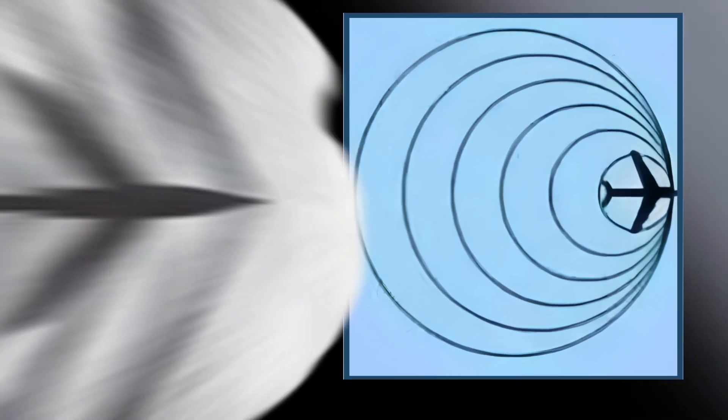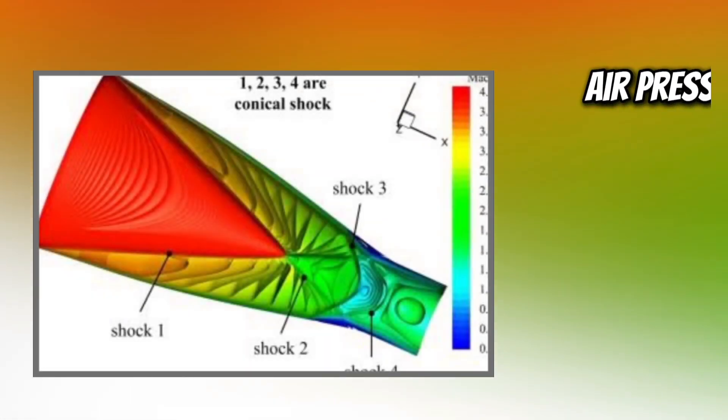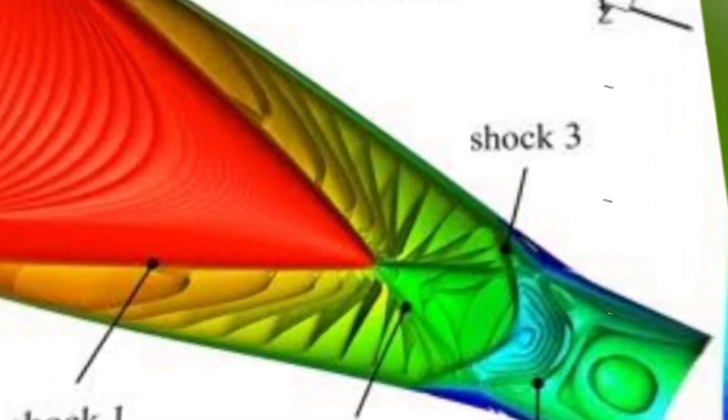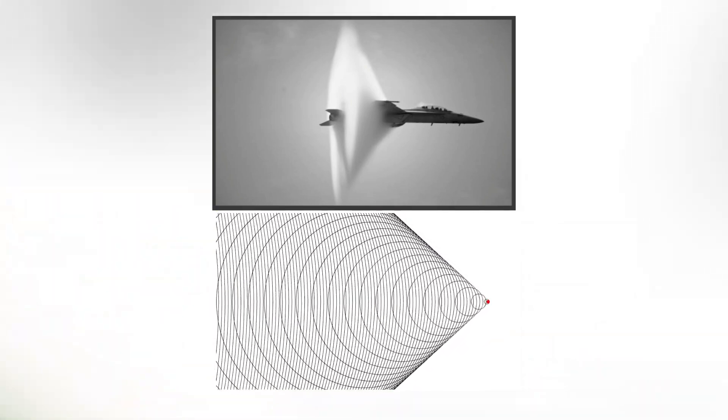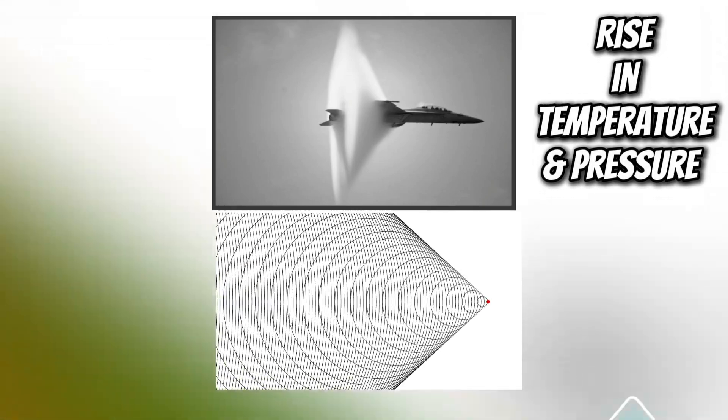The shock waves are thin regions where the air pressure, temperature, and density change almost instantaneously. As the aircraft reaches the speed of sound, these shock waves become more pronounced and can cause a rapid increase in pressure and temperature in front of the aircraft, followed by a rapid drop in pressure and temperature behind the shock wave.